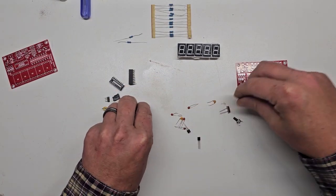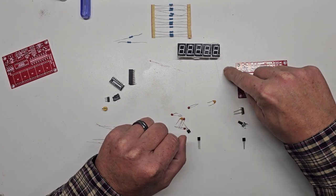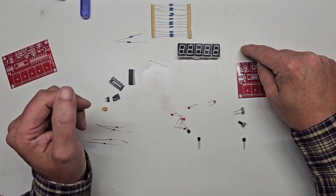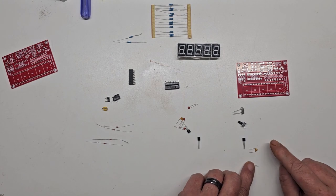The first step is to lay out all the components to make sure everything is there. Group common parts together to make it easier to find when you start assembly. Look everything over to ensure there are no damaged or missing parts.